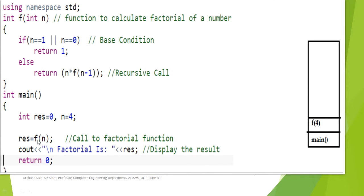Through main, f of n is called — called to a factorial function. Then it goes to the function definition, and based on the base condition, either the if part or the else part will be executed.